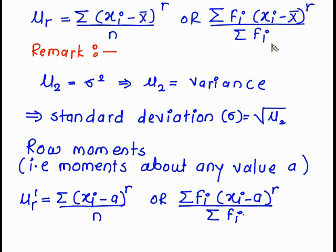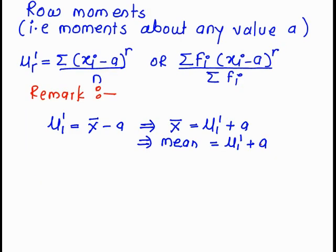If you observe the difference between mu r and mu r dash, both formulas are the same except here we have a and here we have X bar. That is the difference between these two formulas, and it is easy to remember.